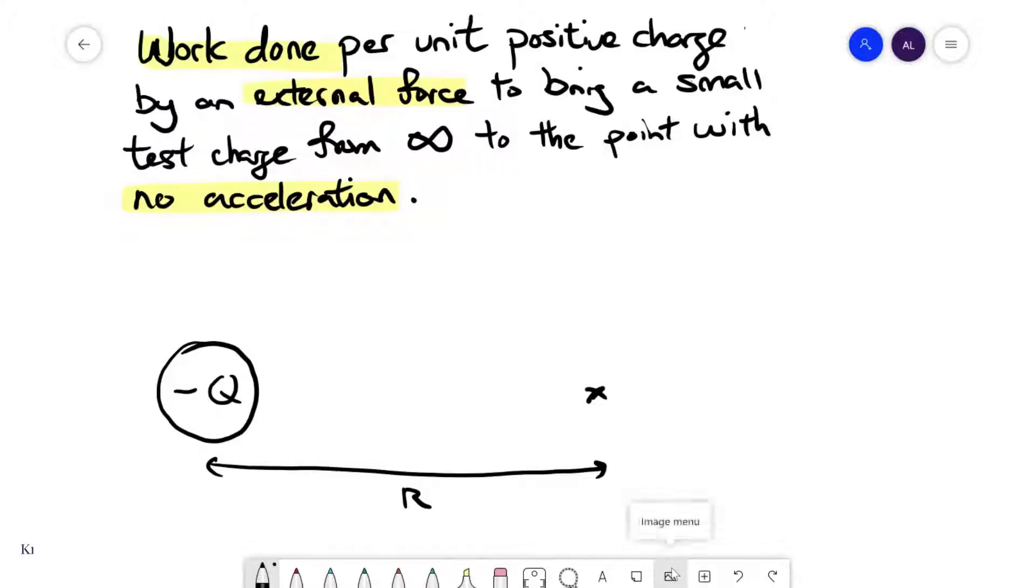In this video we're going to talk about electric potential. Electric potential describes a point in space. If we look at this point over here, we are a distance R from a charge minus Q. Then my electric potential V is simply minus Q over 4π epsilon naught R. In this case it is extremely sign sensitive.